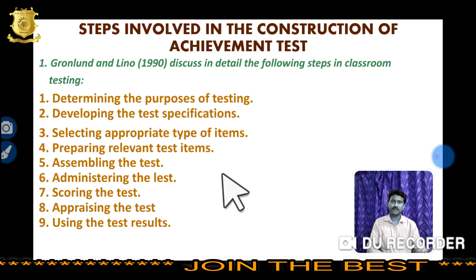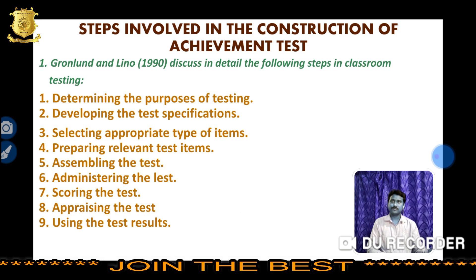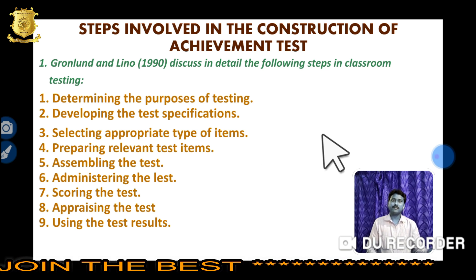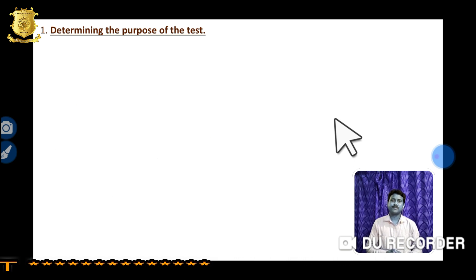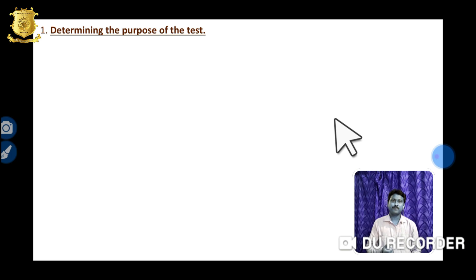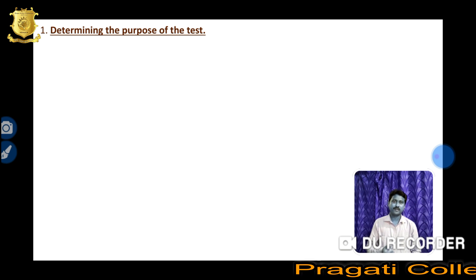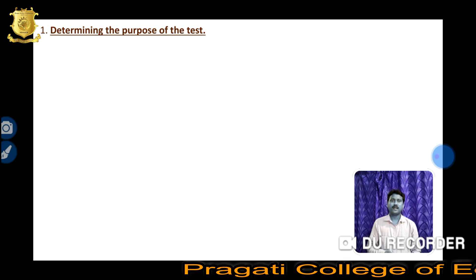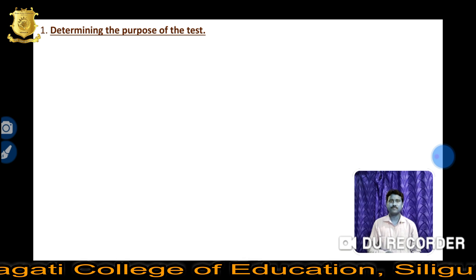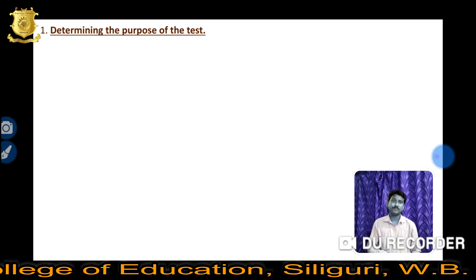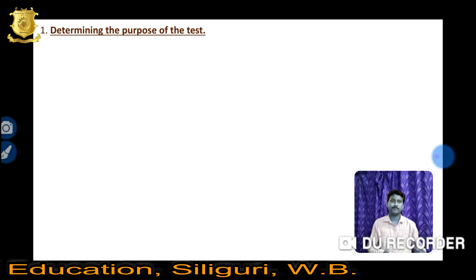We will discuss individually each of the different steps. So first is determining the purpose of testing. You need to determine the purpose of testing — before conducting an Achievement Test, the educator must decide the purpose for which the test needs to be constructed. The purpose of testing is very essential for constructing an Achievement Test.